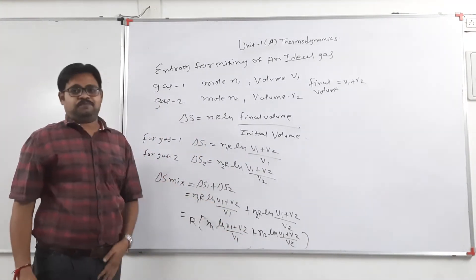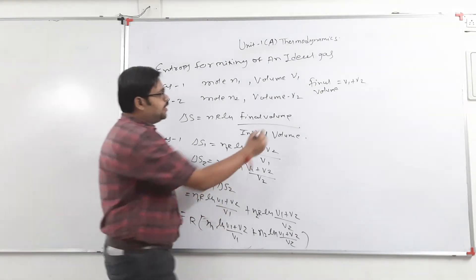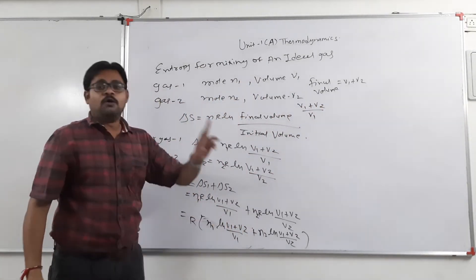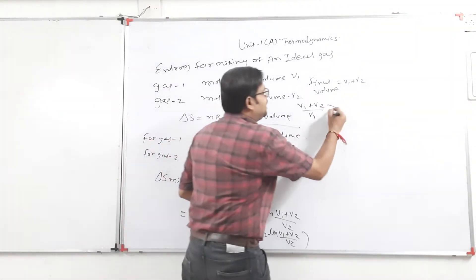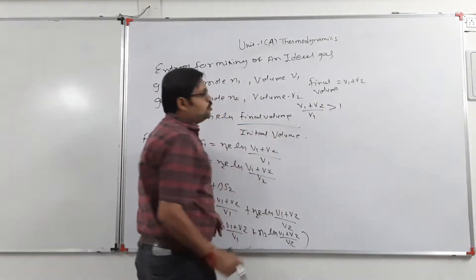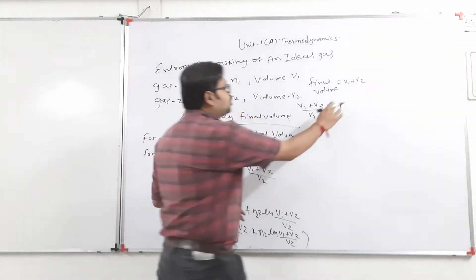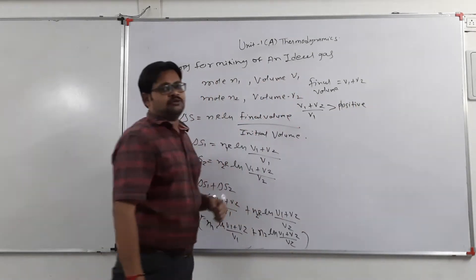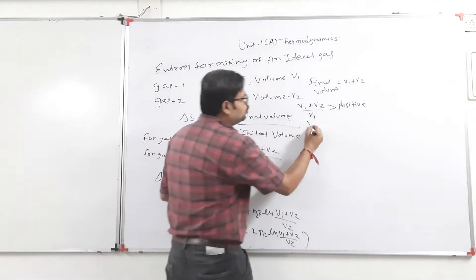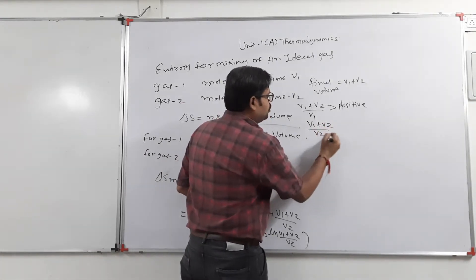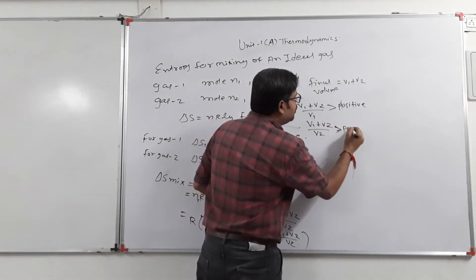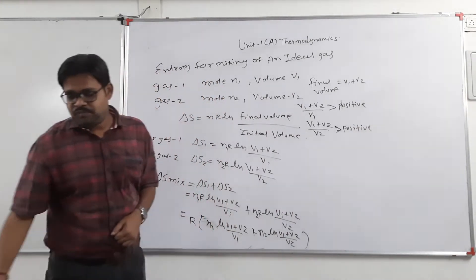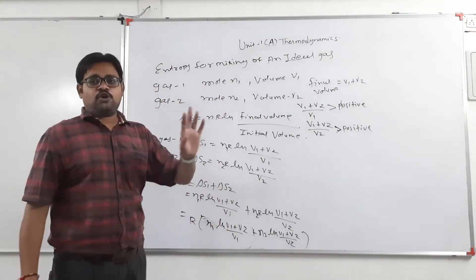The ratio V1 + V2 upon V1 is always greater than 1, so its natural log is always positive. Similarly, V1 + V2 upon V2 is always greater than 1 and positive. Therefore the entropy of mixing value is always positive.